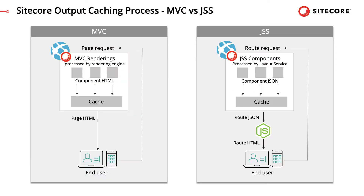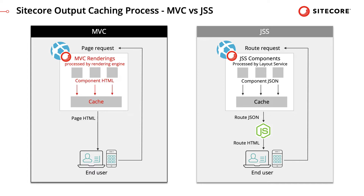It's important to understand that Sitecore Output Caching in JSS does not work the same way as it does in MVC. In MVC, Output Caching saves the HTML that is returned by the render rendering pipeline for any rendering which has caching enabled. So, on subsequent requests, we already have the HTML for those renderings and no additional processing needs to be performed.